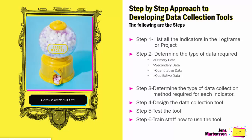Step four is to design the data collection tool. Designing the tool requires that you sit down — you can do it as a team or by yourself — and design it. After you design it, you test it. When testing the tool, you have to make sure that all the indicators in the project are captured in the tool, such that when you go and collect data, you know you are collecting against those indicators.